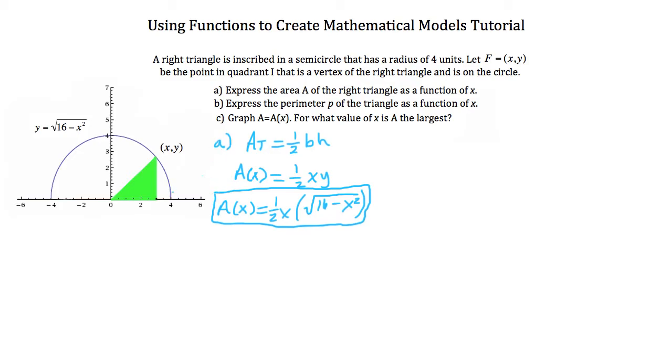Now let's take a look at part B here. Part B asks us to express the perimeter P of the triangle as a function of x. So the perimeter of a triangle is the sum of the lengths of all three sides. We know that this side has a length of x, this side has a length of y, and this side we can use the distance formula to calculate. So the perimeter for our right triangle is P equals x plus y plus the distance, and this is where the distance formula comes into effect.